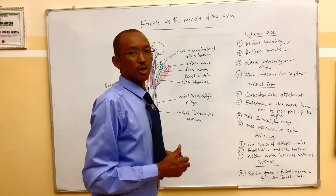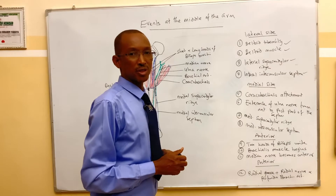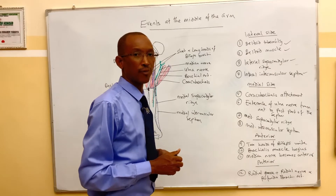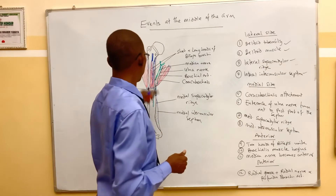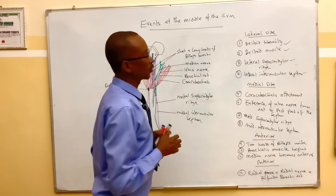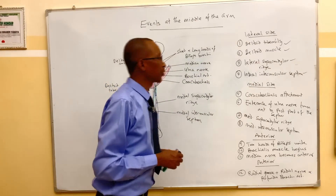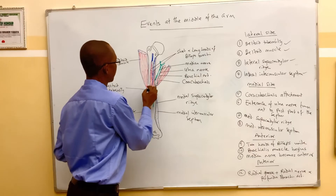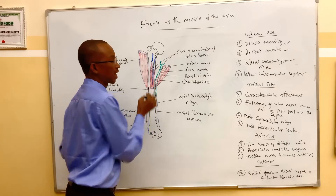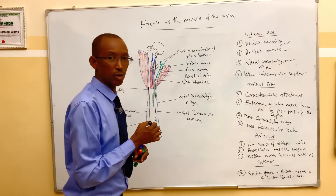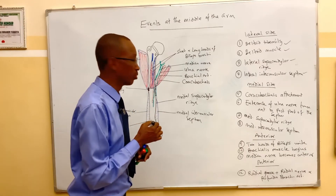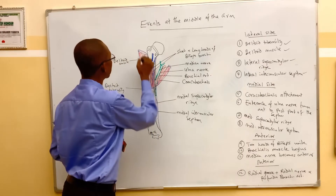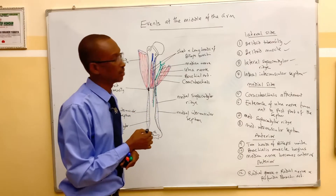Hello viewers, today I'm going to discuss the events at the middle of the arm. At the middle of the arm, when we look at the lateral side of the arm, we are going to see the deltoid tuberosity, which I discussed in my video of the humerus. This deltoid tuberosity gives attachment to the deltoid muscle.